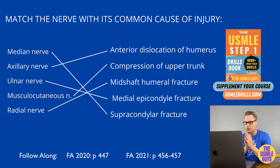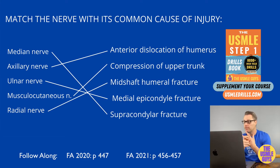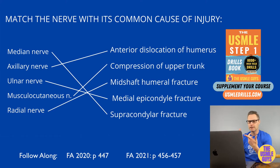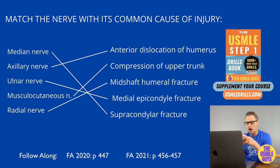Common injuries affecting the axillary nerve include fracture of the surgical neck of the humerus and anterior shoulder dislocation — probably the most high-yield ones to know. Also consider a stab wound to the posterior shoulder and the use of crutches, causing what is known as crutch palsy.